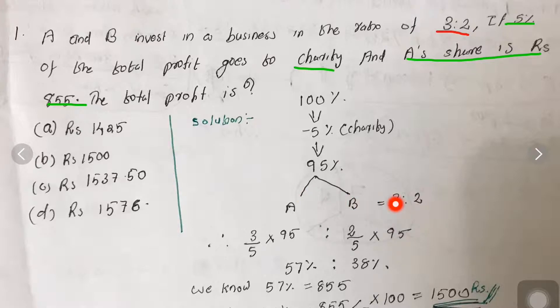The profit is divided between A and B in the ratio 3:2. As in the question, the ratio is 3:2.